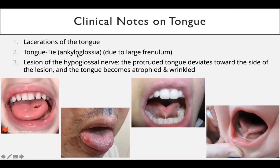The second clinical condition is tongue tie, also called ankyloglossia. This is due to a large frenulum which ties the tongue to the floor of the mouth. Because of this, the patient cannot move the tongue properly. An ENT surgeon can perform surgery to correct this condition.